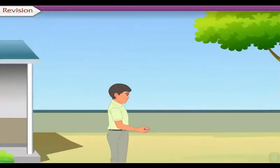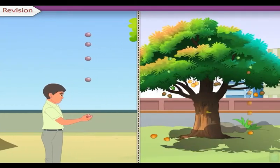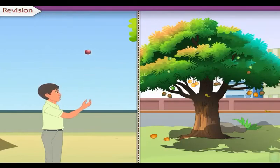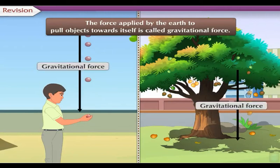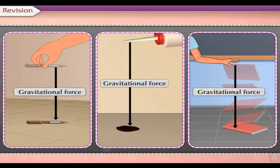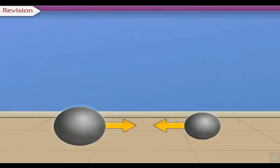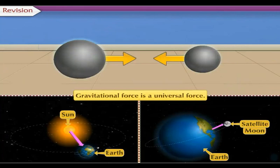Let us begin. If a ball is thrown upwards by applying force, it reaches a certain height and comes down again. When fruits of trees ripen, they fall down. This happens because the earth pulls all objects towards itself. The force applied by the earth to pull objects towards itself is called gravitational force, and it acts on every object. We have learned that gravitational force is a universal force — it acts not only between two objects on the earth, but also between two objects in the universe.